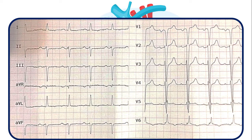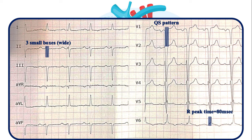Here is the next example. Is it LBBB or not? The duration of QRS complexes is 3 small squares. The complexes exhibit a QS pattern in V1. R-peak time in lateral leads is about 80 milliseconds, which favors a slurred R-wave. So the QRS complex changes are due to typical LBBB.